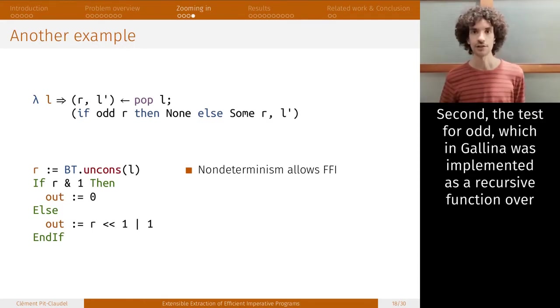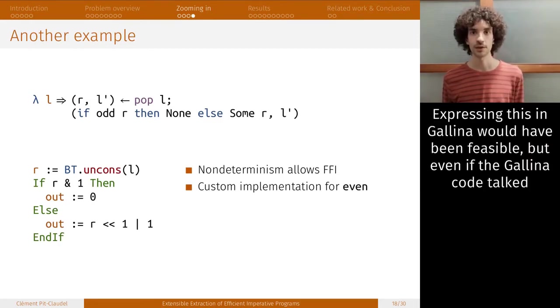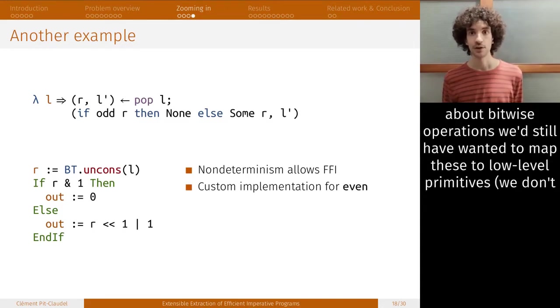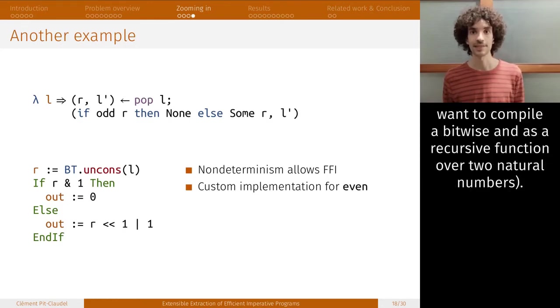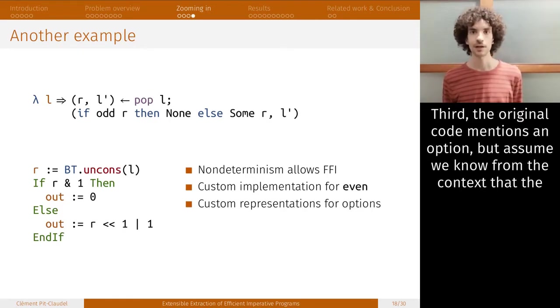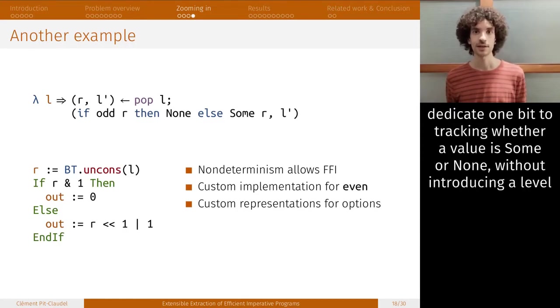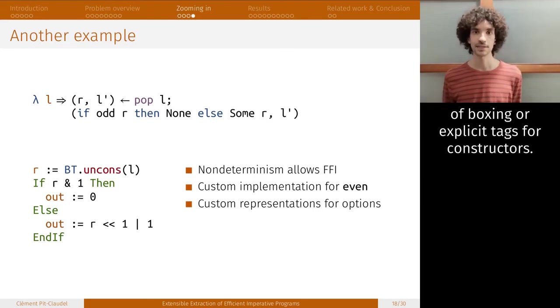Second, the test for odd, which in Galena was implemented as a recursive function over natural numbers, got transformed to an efficient bitwise operation. Expressing this in Galena would have been feasible, but we'd still have wanted to map these to low-level primitives. We don't want to compile a bitwise AND as a recursive function over two natural numbers. Third, the original code mentions an option, but assume that we know from context that the values in that option are bounded and don't require all 64 bits of the machine word. Then we can dedicate one bit to tracking whether a value is some or none without introducing a level of boxing or explicit tags for constructors.